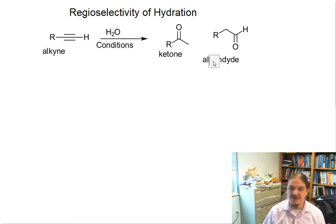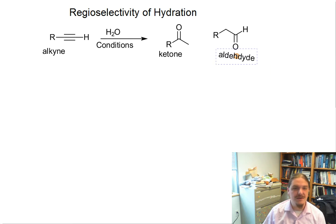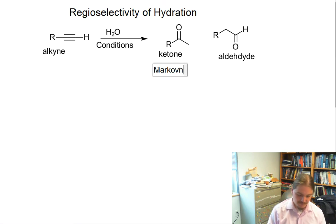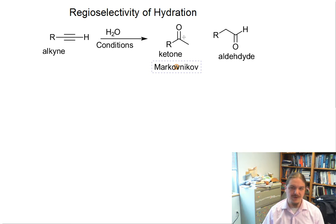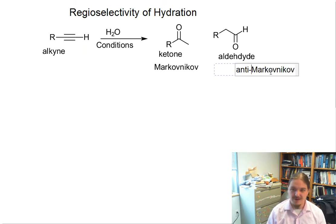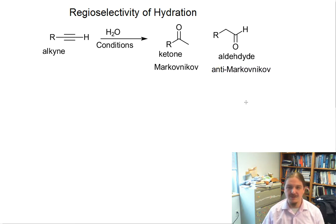Much like the hydration reactions of alkenes, we can use the same regioselectivity labels. We can call the ketone the Markovnikov product, where the nucleophile ends up in the more substituted position. And we can call the other product the anti-Markovnikov product, where the functional group ends up in the less substituted position.